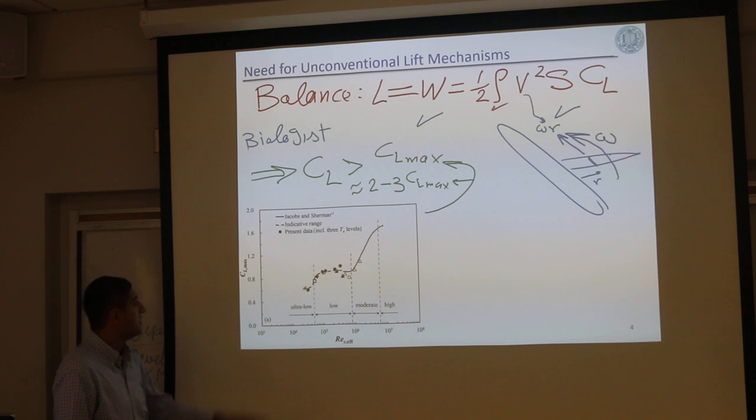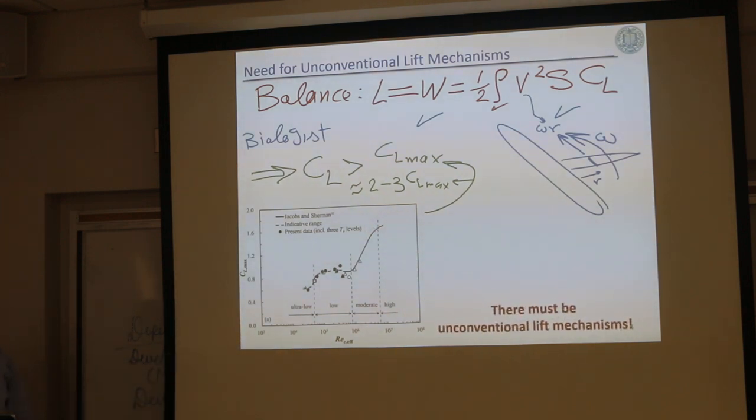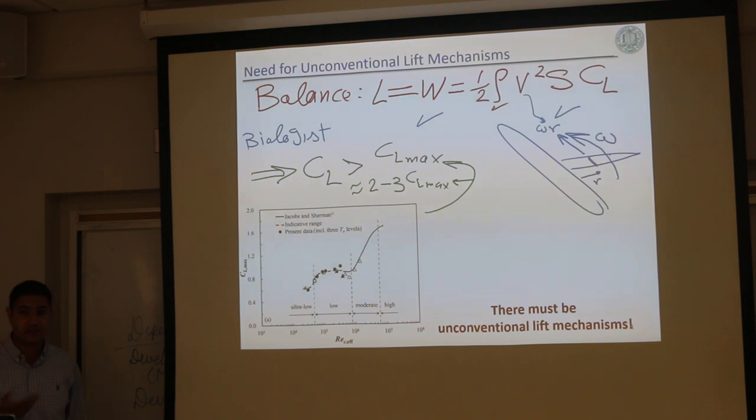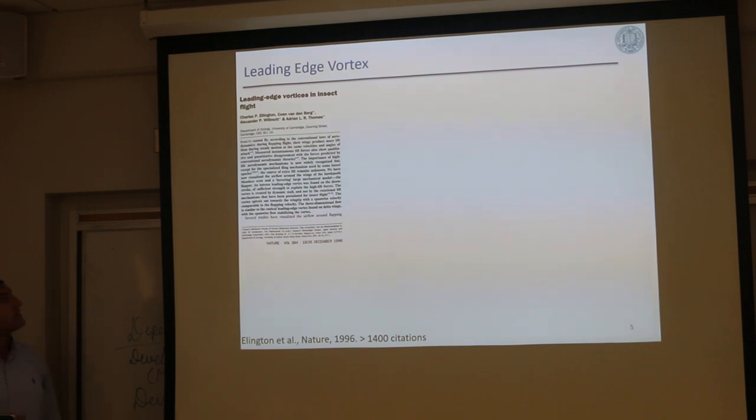From this, what's the conclusion? The conclusion is that insects must rely on unconventional lift mechanisms. It's not the usual lift mechanism that we live with in conventional aerodynamics. Any questions so far? So until 1996 - I can track back papers up to 1918, I have these papers - from 1918 up to 1996, people keep invoking unconventional lift mechanisms. We have several tens of papers that conclude insects must rely on unconventional lift mechanisms. We don't know what are these. And this paper in Nature by Ellington - he's in the university of Cambridge, and as you can see it's now more than 1400 citations.